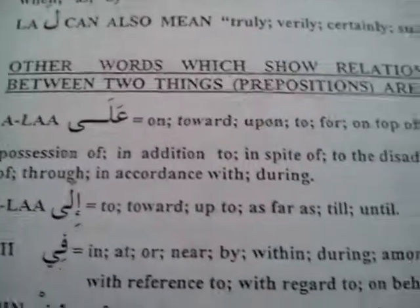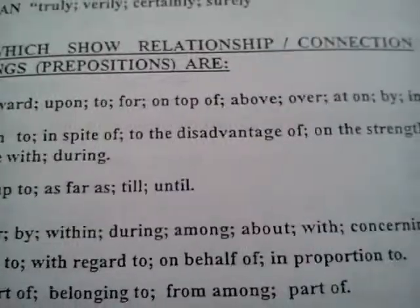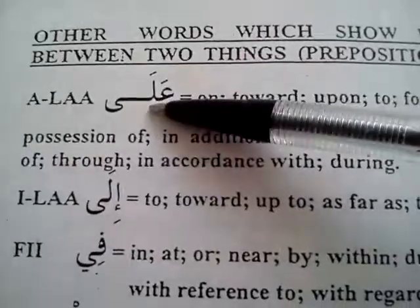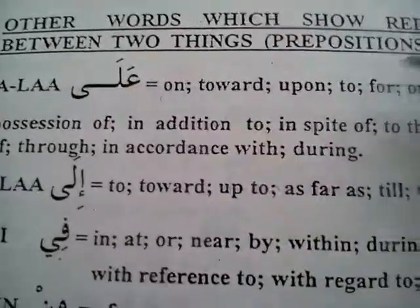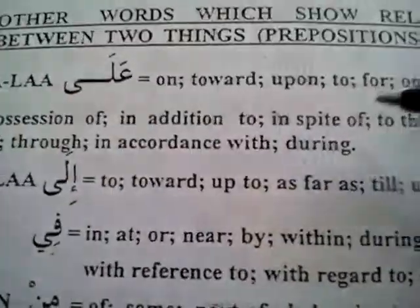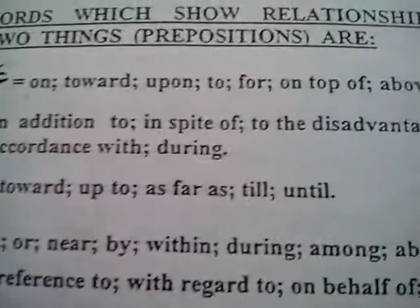Other words that show relationships or connection between two things will be 'ala', meaning on, or towards, or upon. These will be your prepositions: to, for, on top of.